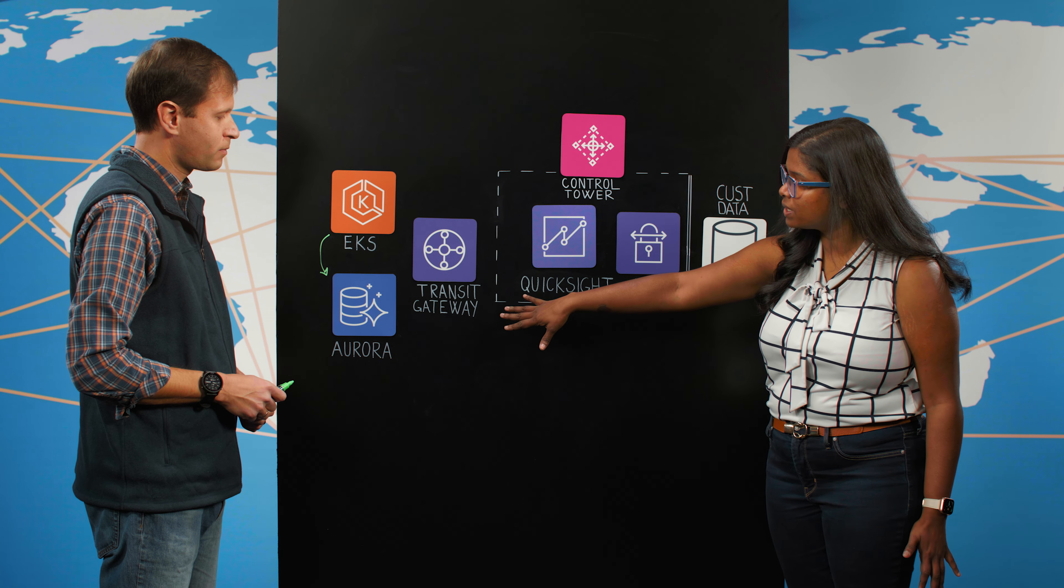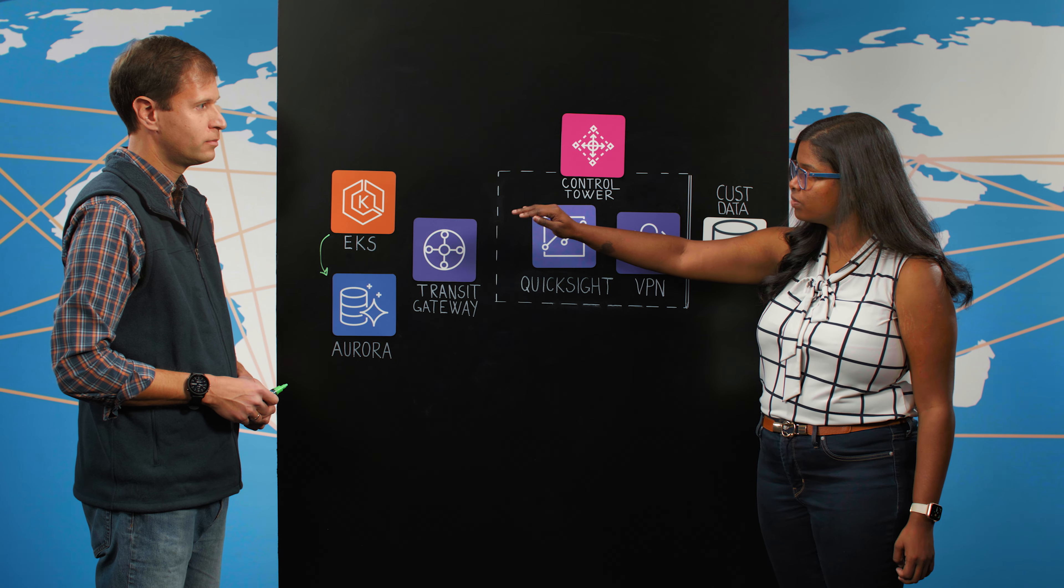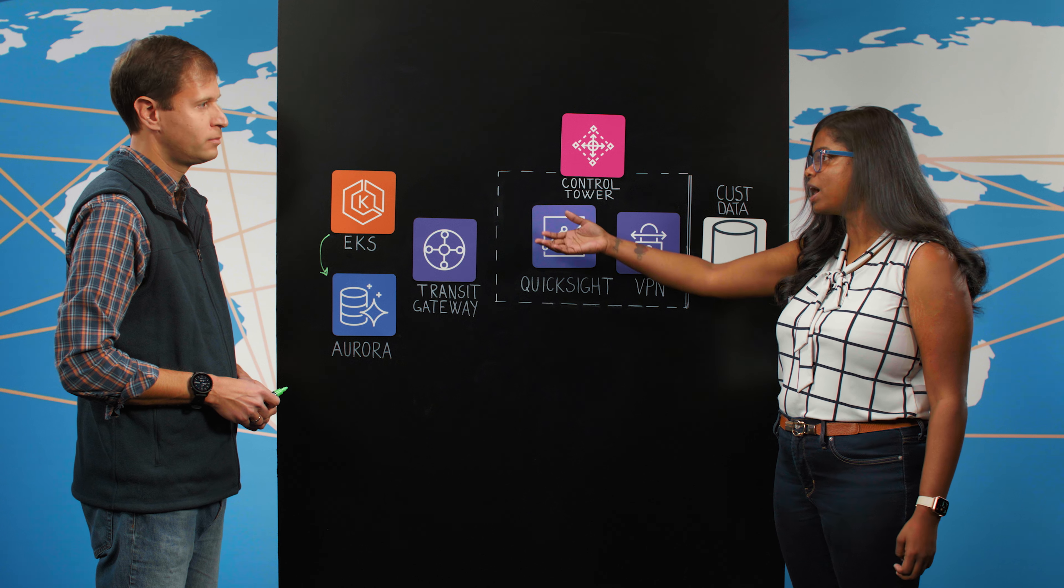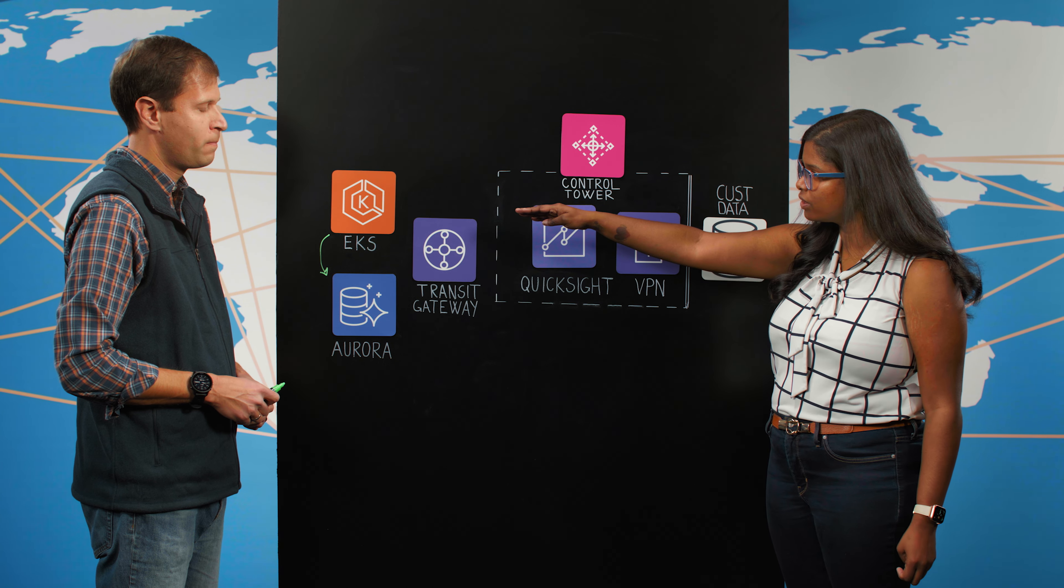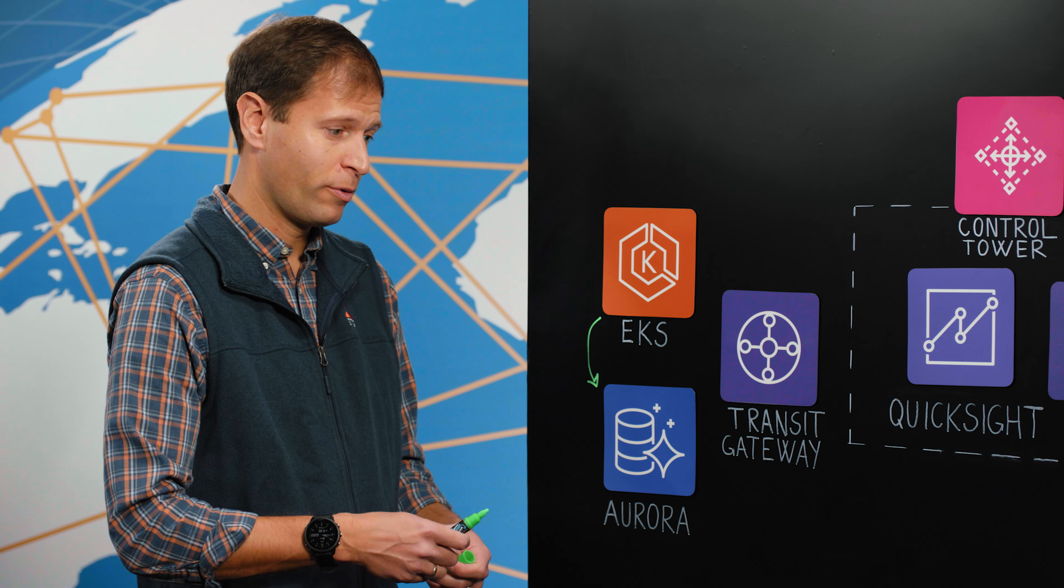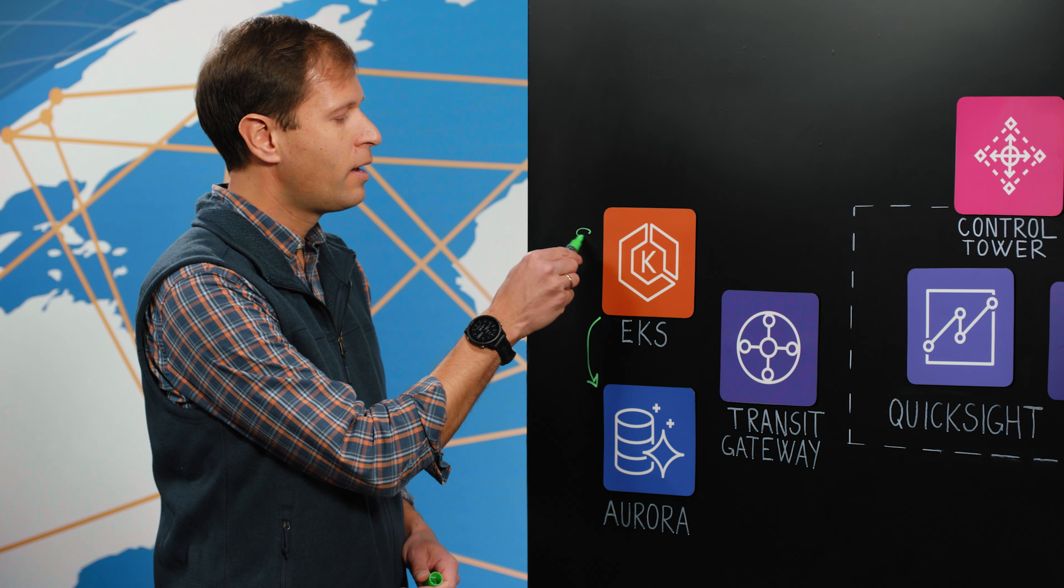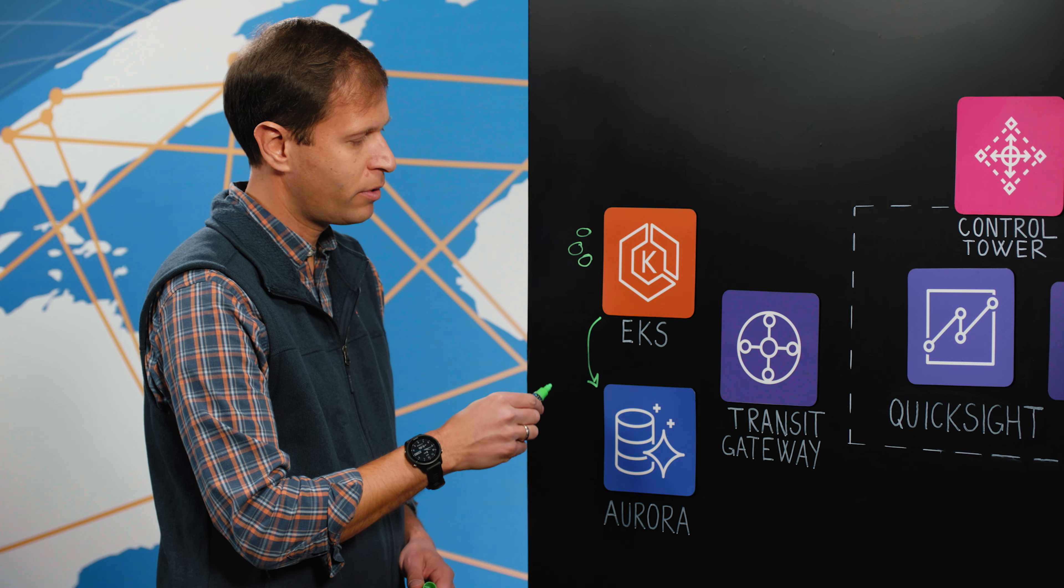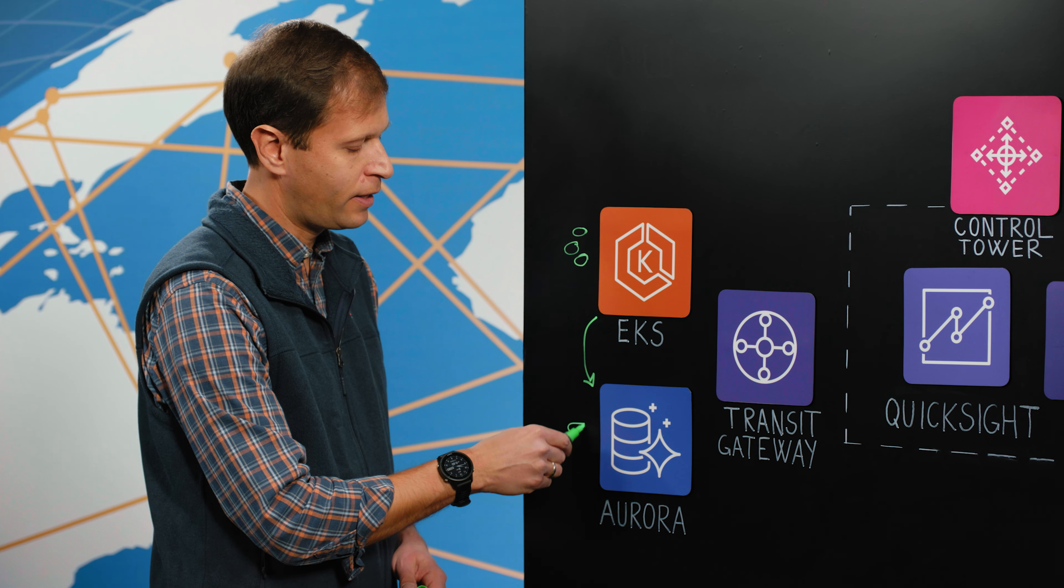So on this side is your multi-tenant application. This is a loan origination system, so it's a highly regulated industry. How do you take care of data privacy and isolation on the application itself? Exactly, we never want to commingle customers data. So we have separate pods on EKS per tenant and then we have separate schemas in the database per tenant.